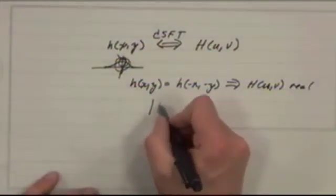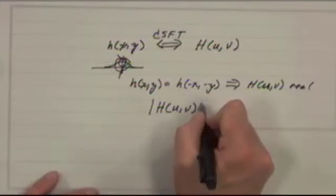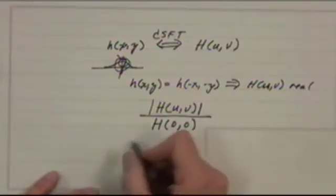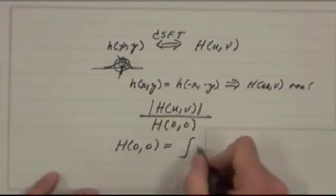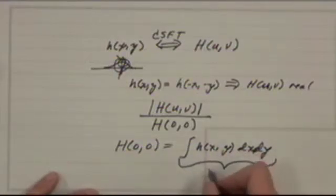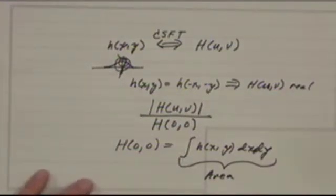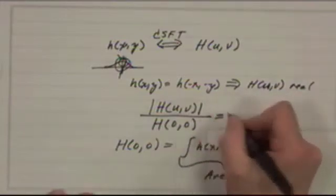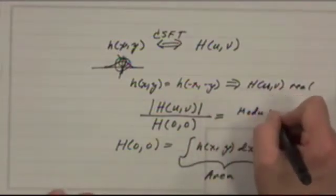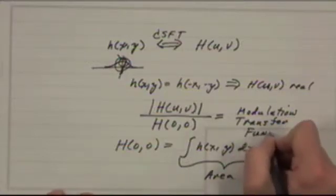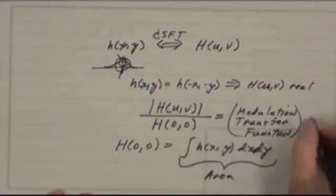So often people are interested more in, let's look at what the magnitude of h of u, v looks like, and we'll normalize by h of 0, 0. So what's h of 0, 0? Everybody should know this. h of 0, 0 is equal to the integral of h of x, y dx dy. It's the area under the point spread function. So this is going to be normalized, and if you plot that, this thing here is called the modulation transfer function, or MTF.